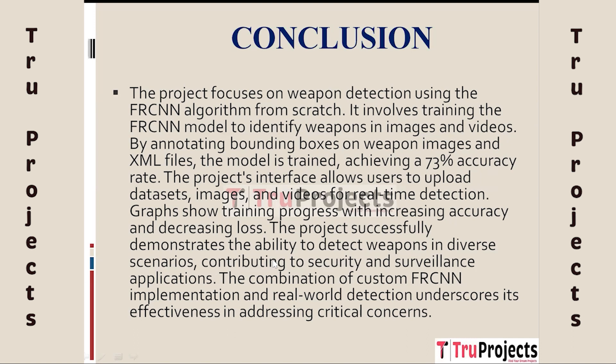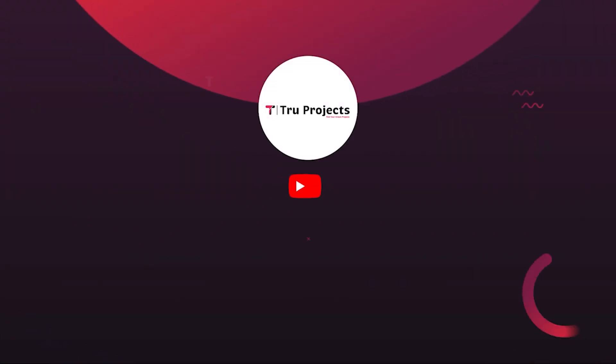In conclusion, the project focuses on building a custom Faster RCNN algorithm for weapon detection. The Faster RCNN model is trained to recognize firearms in images and videos by annotating bounding boxes in XML files. Users can upload datasets, images, and videos through the project interface. The detection graphs display training progress with accuracy improving and loss reducing. The project effectively demonstrates the capability to detect firearms in a variety of settings, highlighting its efficiency in tackling important security and surveillance challenges.